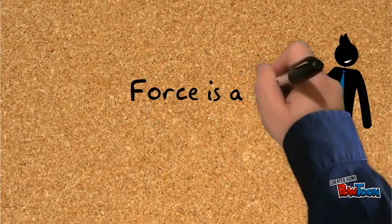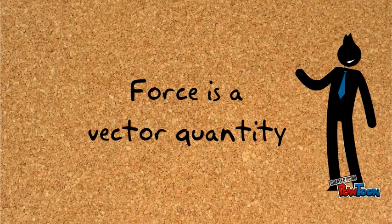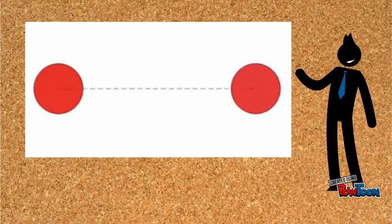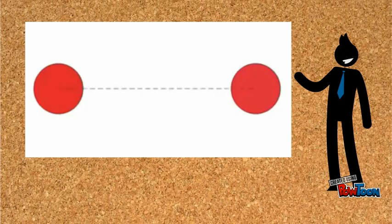Force is a vector quantity, which means it has direction in addition to its magnitude. Here, the force acts along the straight line joining the centers of the charged bodies.